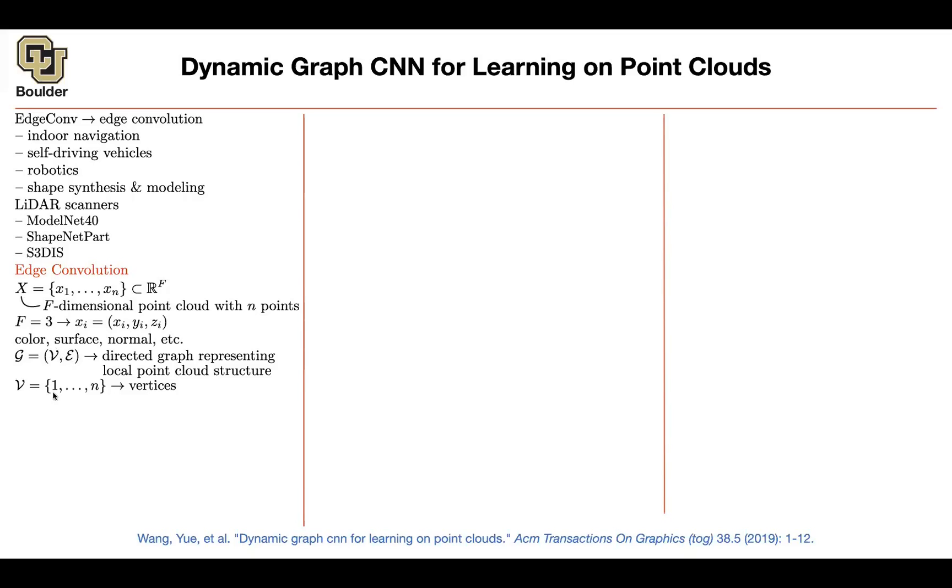The vertices are going to be your points. The edges are going to be connections between the points and how do you come up with that? You do k-nearest neighbor. So once you do your k-nearest neighbor, it's going to give you your edges. And in addition to k-nearest neighbor, there is also a self-loop.